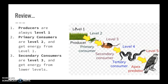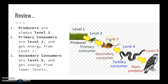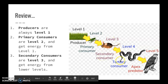As a review: producers are always our level one trophic level because they make energy from either sunlight or chemicals. They are the source of energy for our ecosystem, so they are level one. Primary consumers are level two trophic level. Secondary consumers are trophic level three. Tertiary consumers are trophic level four. Apex predators are typically trophic level five, maybe higher, maybe level four — just the highest level.